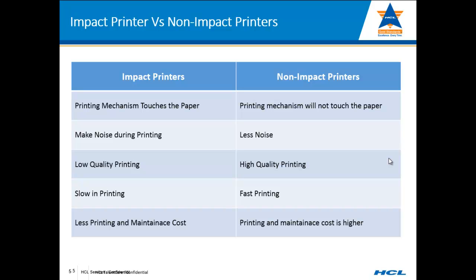Impact printers give low-quality printing, while non-impact printers give high-quality printing. For high quality, laser jet printers are used — Xerox and Toshiba are leading OEMs in the Indian market, and most offices have these higher-end laser jet printers. Generally, impact printers are slow and non-impact printers are fast, though line matrix printers can be fast within the impact category. Impact printers have lower printing and maintenance costs, whereas non-impact printers have higher maintenance costs.